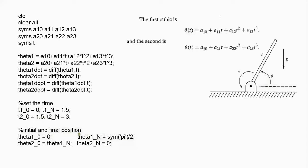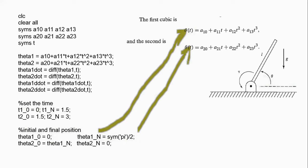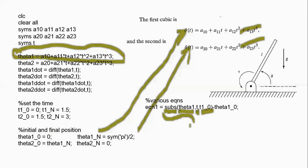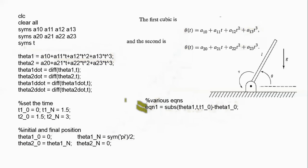Let's substitute all initial and final conditions and the via-point condition into these cubic equations to calculate all the coefficients. In MATLAB, use the command subs to substitute initial and final positions. Write the equation as theta1, and put t = t10. If you substitute t = t10 into theta1, you should get theta10, meaning the left-hand side equals 0. So 0 = subs(theta1, t, t10) - theta10.